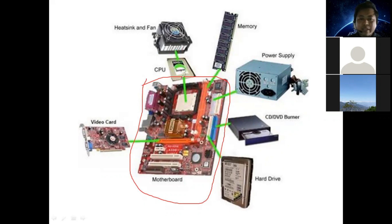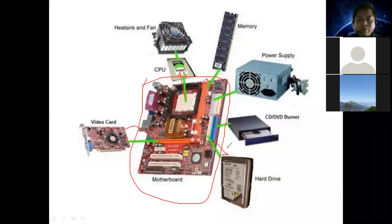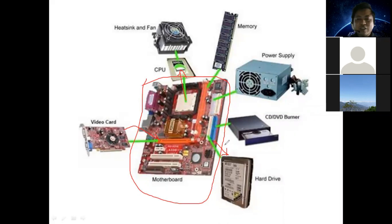The CPU includes components like video card for video editing and gaming. Memory — RAM — is used for temporary storage. Long-term storage includes the hard drive, where your files and programs are stored. CDs and DVDs are also used for storage.